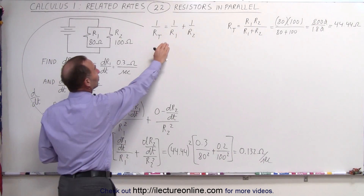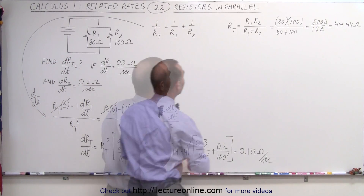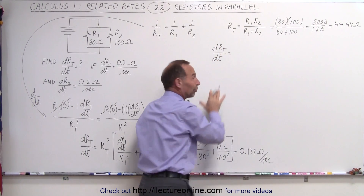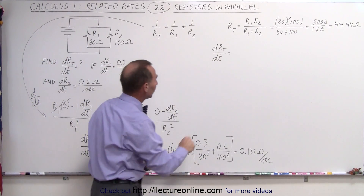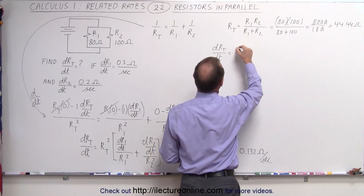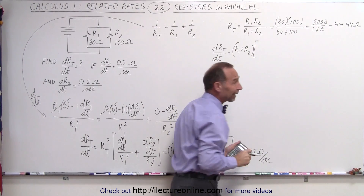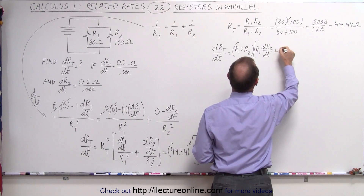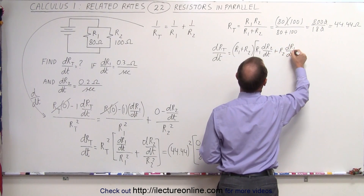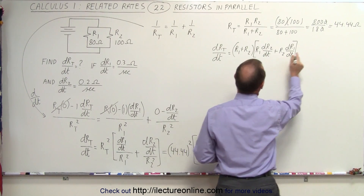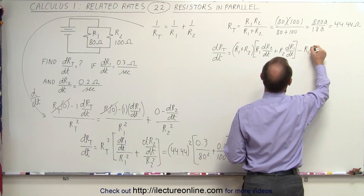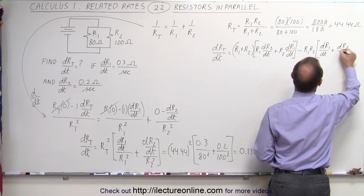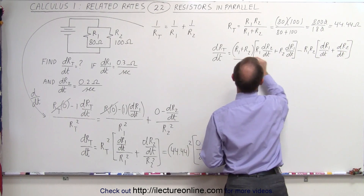Now let's use the product-over-sum equation and verify we get the same result. The derivative of the left side is simply dR_total/dt. The right side is a quotient, so we apply the quotient rule. The numerator R1·R2 is a product, requiring the product rule: first times derivative of second plus second times derivative of first. This gives us: the denominator (R1+R2) times (R1·dR2/dt + R2·dR1/dt), minus the numerator R1·R2 times (dR1/dt + dR2/dt), all divided by (R1+R2) squared.